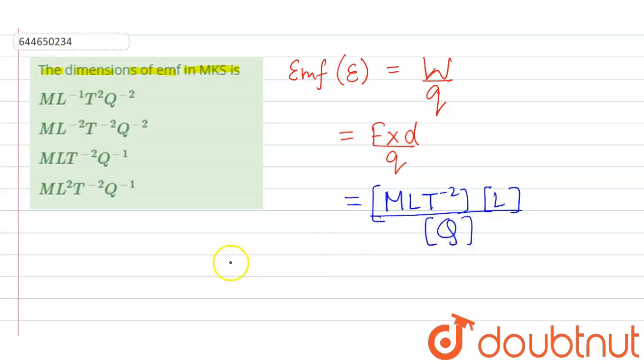So on solving we get ML2 T minus 2 divided by Q.